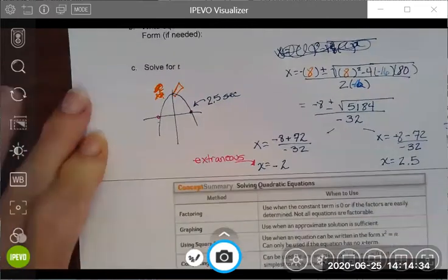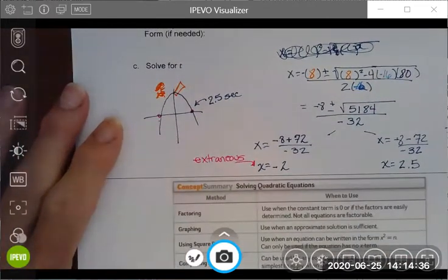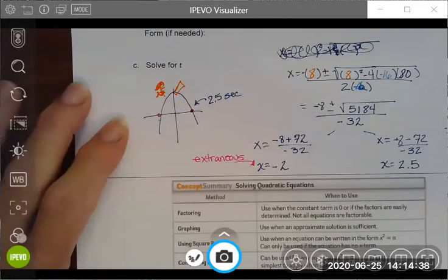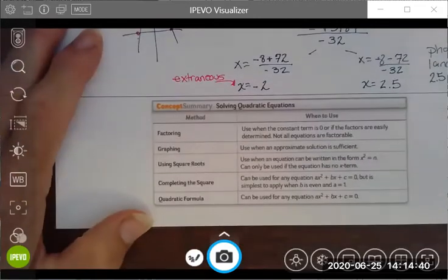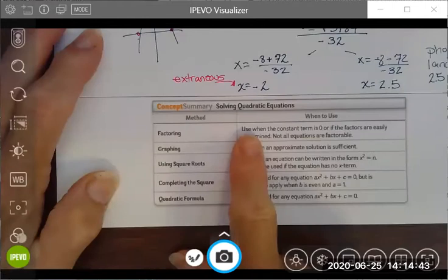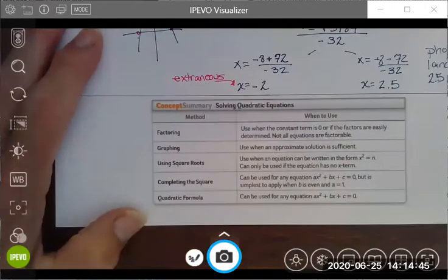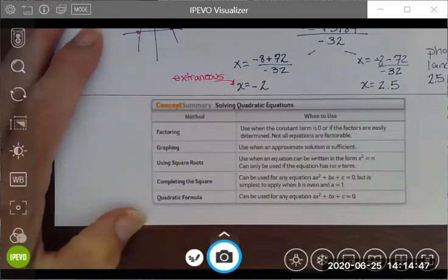And the extraneous solution just represents the other side of this parabola, but it doesn't really make any sense in the context of this problem. All right, so that's how we can use vertical motion formula to help us solve real-world equations.